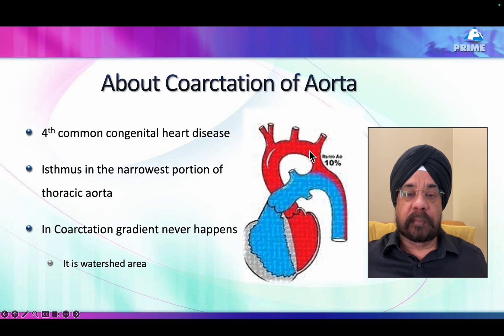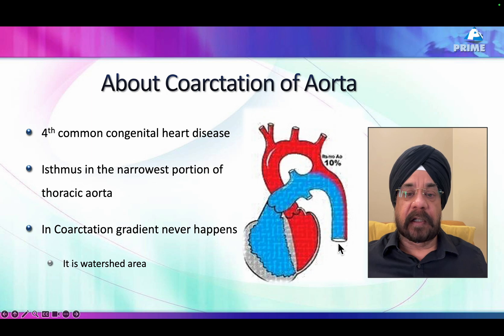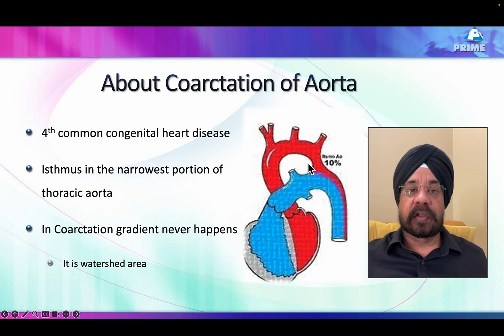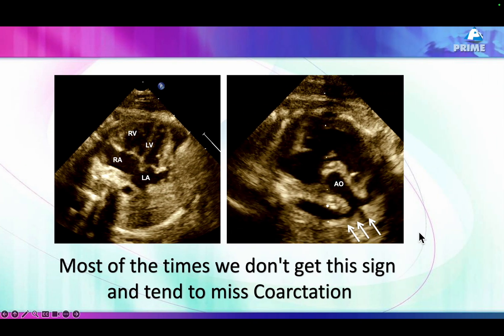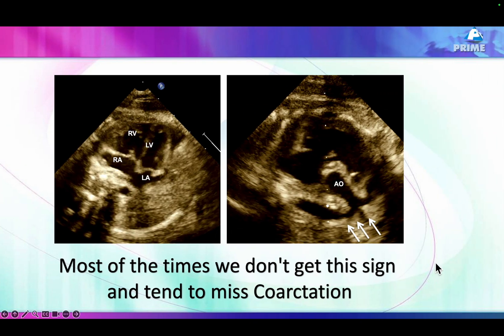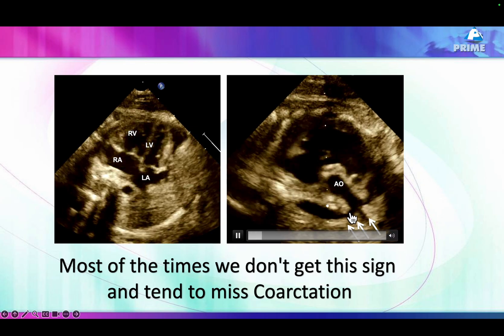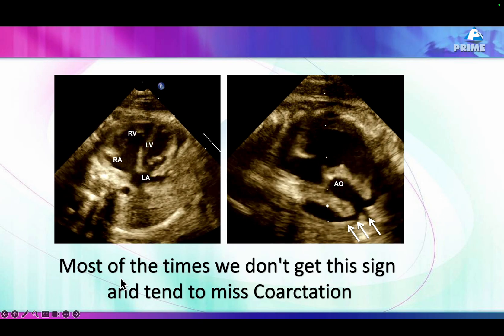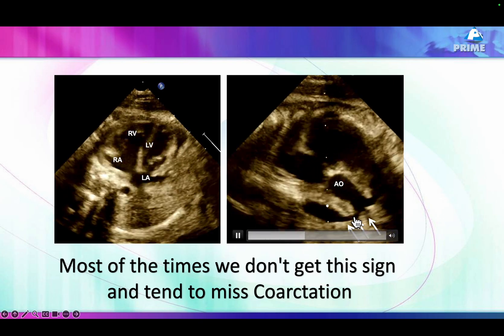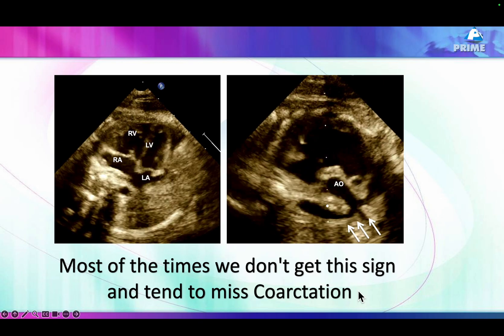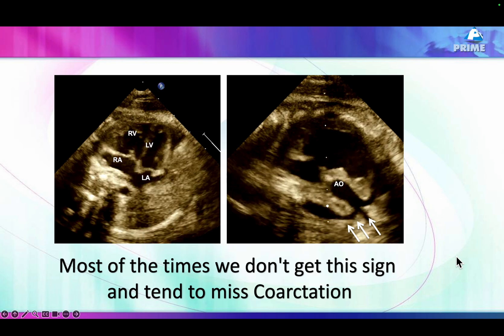The descending aorta is small, while the ascending aorta is okay. This is a watershed area — blood from the left ventricle goes to the cerebral circulation and arms, while flow from the pulmonary artery mostly goes to the descending aorta rather than the lungs. This area grows less, so the isthmus is smaller. When diagnosing coarctation of aorta, you see the right-sided chambers are dilated, and sometimes you can see a nice coarct segment, but unfortunately most of the time this sign is not clearly visible due to resolution issues.